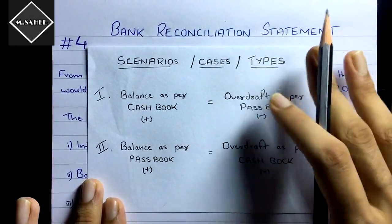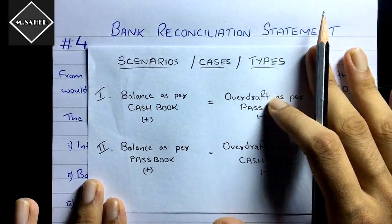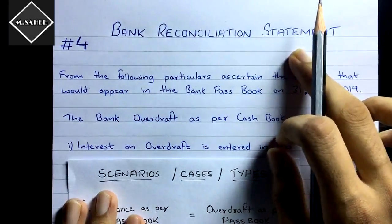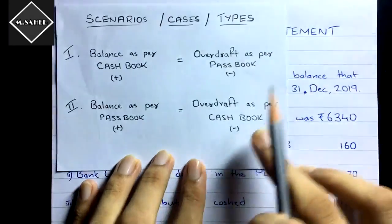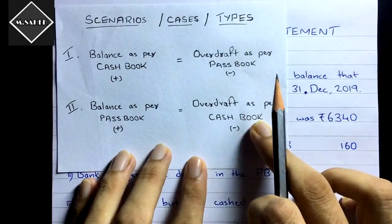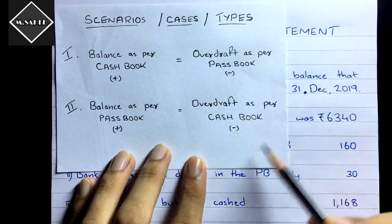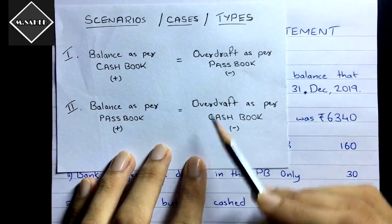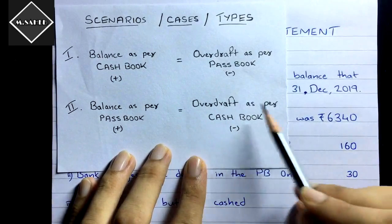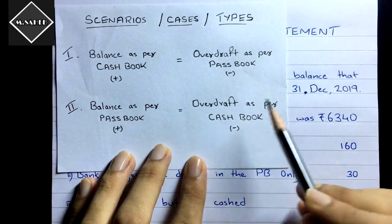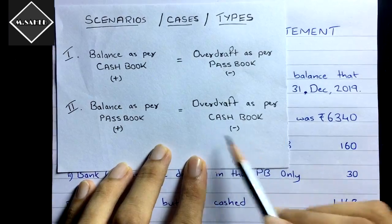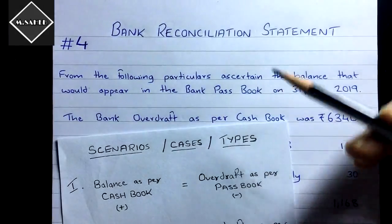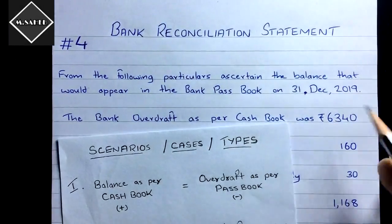In this video we are going to prepare the bank reconciliation statement when overdraft as per cash book is given — when the unfavorable balance is given according to the cash book, when the negative balance is given. You can also say this as credit balance as per cash book. We'll see how to prepare the bank reconciliation statement for this scenario.